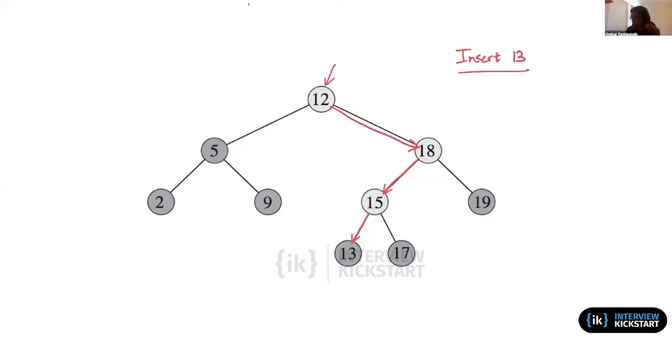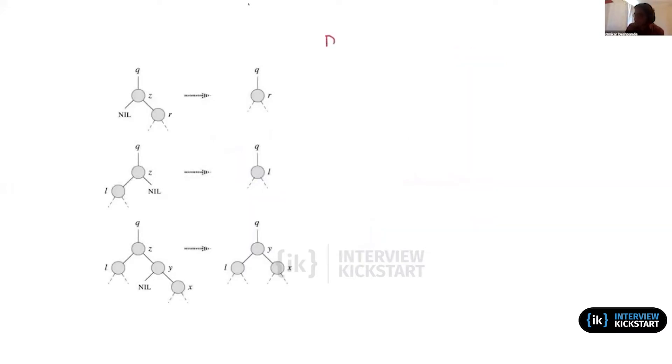And so I would just remove the pointer to 13 from its parent. So when it came to delete, the simplest case was when the node that we are trying to delete, let's say x, is a leaf node. That was the most straightforward case.